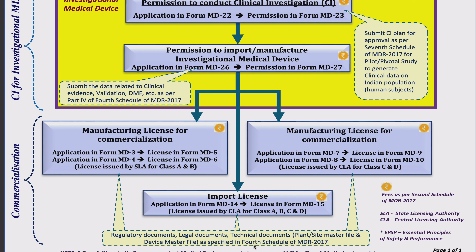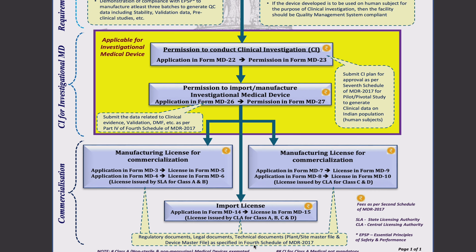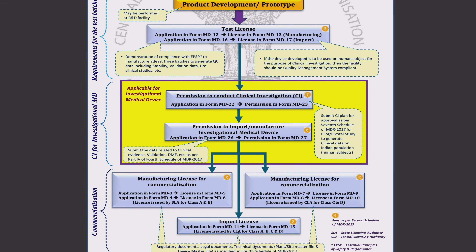To summarize, this was the regulatory pathway. First, once the product is developed, produce three test batches. Then move to the second phase — if it is an investigational medical device, follow the clinical investigation regulations; otherwise, move directly to the third phase, which is commercialization. Depending on the classification, file the appropriate application form. For import-only purposes, go straight to the commercialization phase by filing MD14.